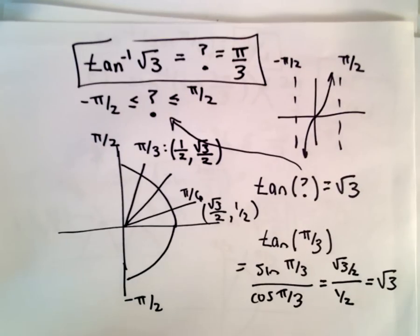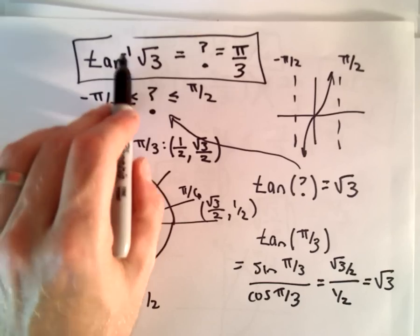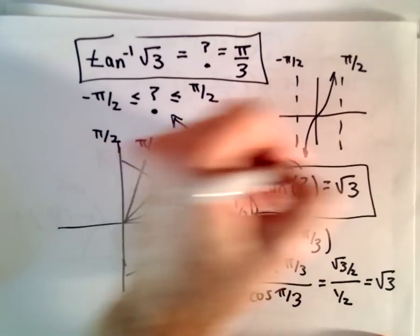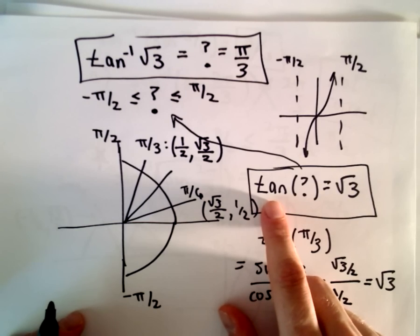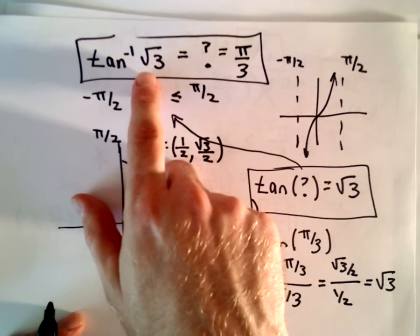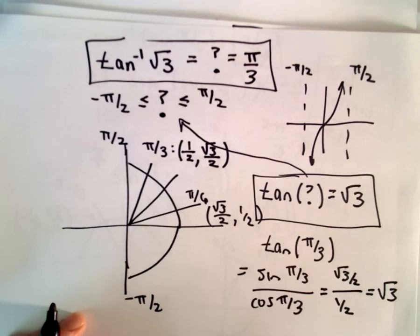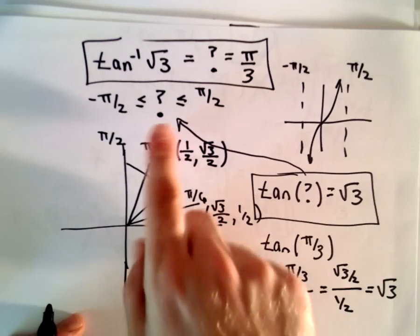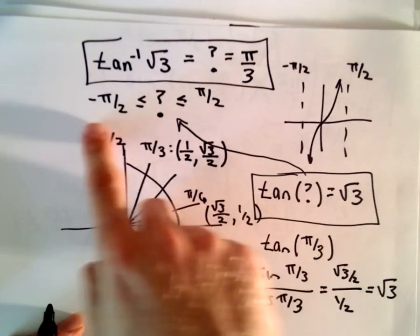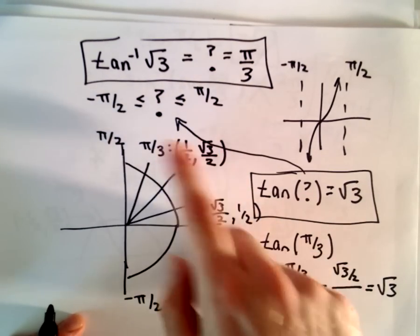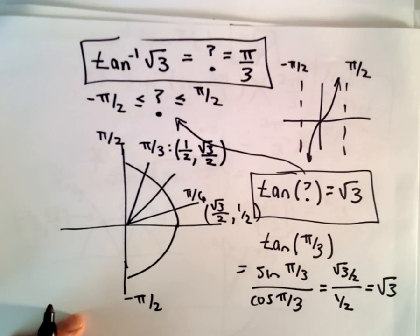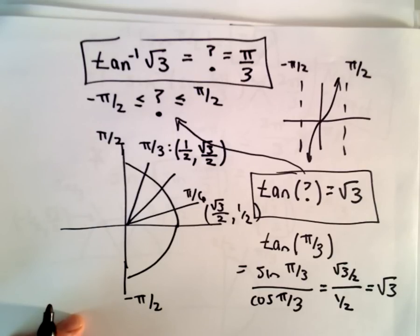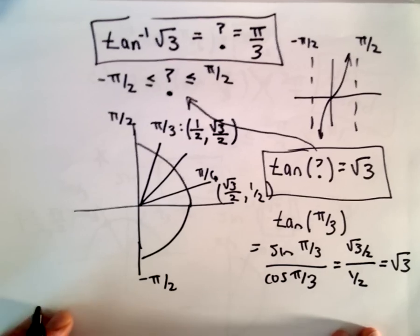Whenever I think about inverse trig functions, I turn it into a problem involving regular trig functions. Inverse tangent of √3 equals what angle? Equivalently: tangent of what angle equals √3? The angle has to be in the prescribed interval, and that's what makes the solution unique. Without that interval restriction, you'd have infinitely many solutions and it wouldn't be a function.